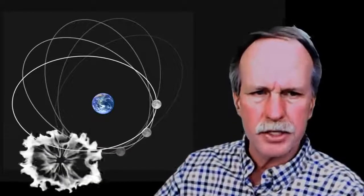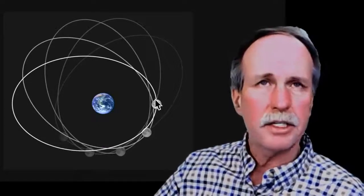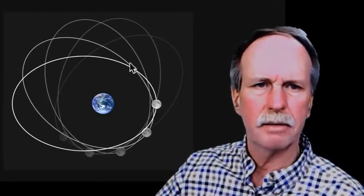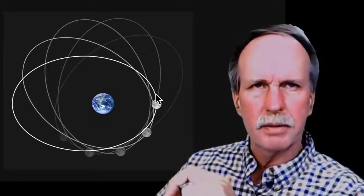Here's an example of precession: on one particular orbit the moon is in one general shape, and as the orbit precesses it goes to a different shape. This continues around 360 degrees over about 18 years. The first orbital period is called the synodic month — that is new moon to new moon — and it takes 29.53 days.